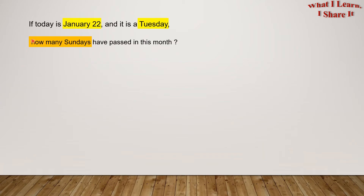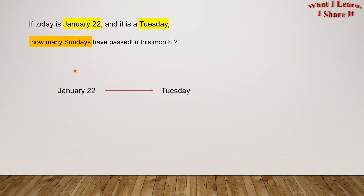If today is January 22nd and it's a Tuesday, how many Sundays have passed in this month? So let's use the working backwards strategy. Today is January 22nd and it's a Tuesday, but we have to find out how many Sundays have passed in the month.